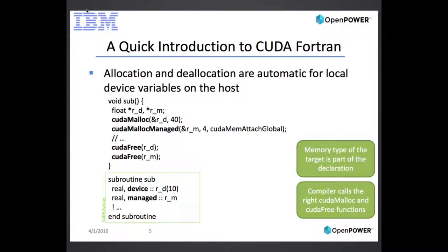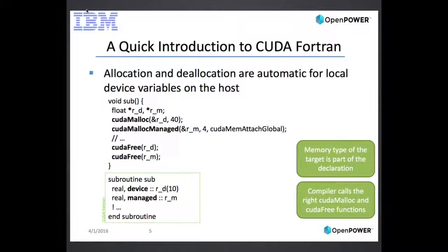If you look at this slide, I have a CUDA-C program where we're allocating an array in global memory and another array in managed memory. In CUDA-C, you need to know what API function to use — CUDA malloc versus CUDA malloc managed — and when you're done, you call CUDA free. If you look at the CUDA Fortran snippet at the bottom, just using the attribute is enough. The XL compiler will call the appropriate malloc function, and when you exit the procedure, it will call CUDA free for you automatically.